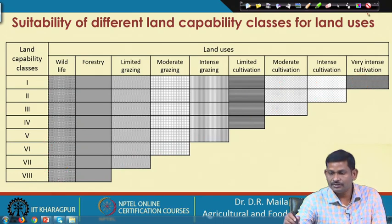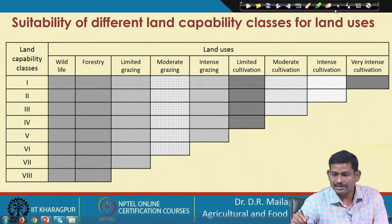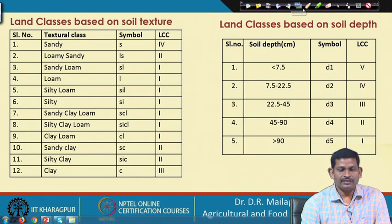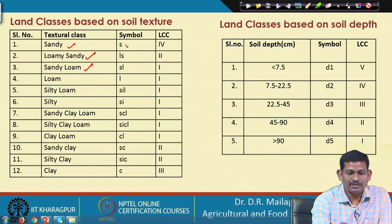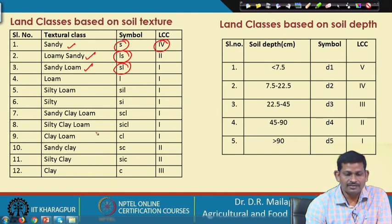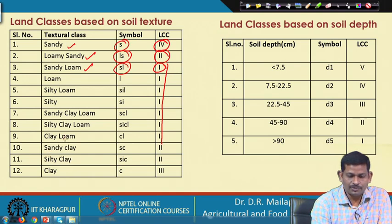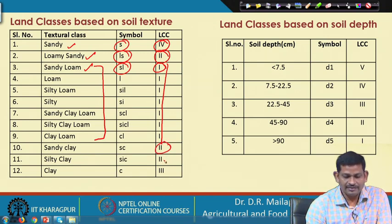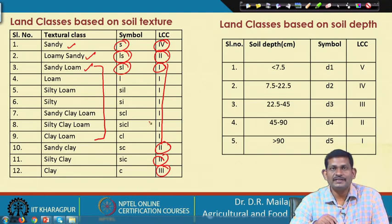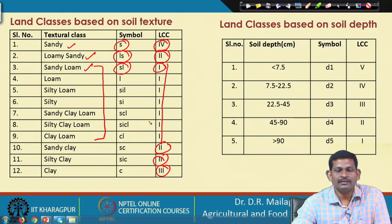Land classes can also be based on soil texture. Sandy soils are 4th class, loamy sand 2nd class, and sandy loam to clay loam are 1st class — very good for cultivation. Sandy clay is 2nd grade, silty clay 2nd, and clay 3rd grade. Based on soil texture, different soils can be placed into the land capability classification.